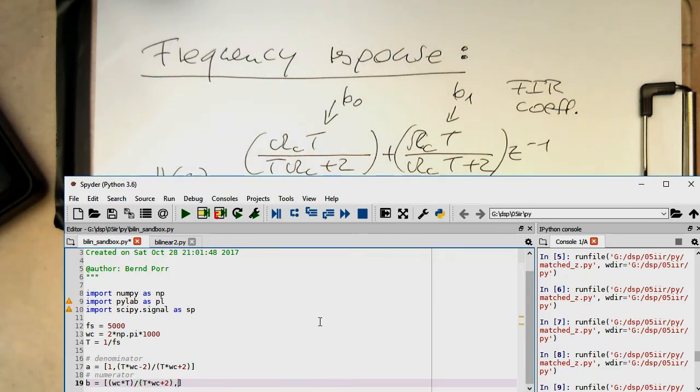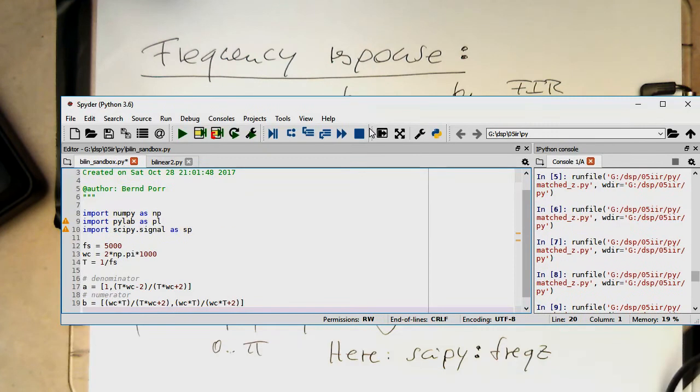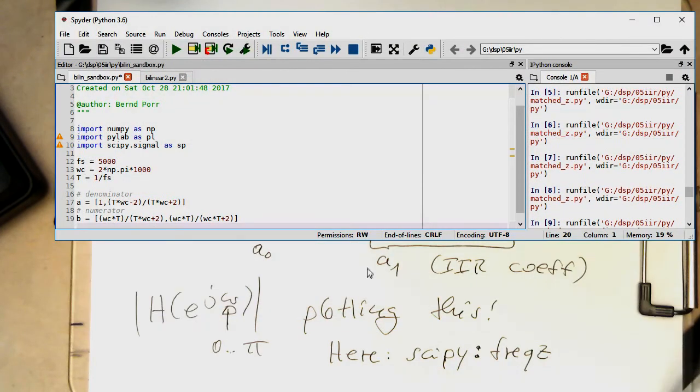And then the second coefficient here is omega c again multiplied by T, and then this divided by omega c multiplied by T plus 2 here. These are very, very odd terms what the bilinear transform provides us.